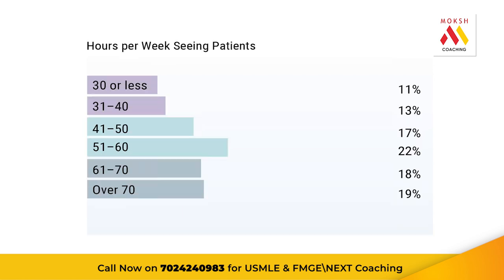Now, in terms of seeing patients — how many patients will you see per week? About 19 percent of programs, typically the more demanding ones, have you seeing over 70 patients. As a pathologist, we barely see patients — maybe one or two. But as an internal medicine resident, you'll see at least 40 to 50 patients per week.